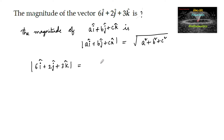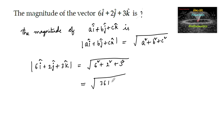Therefore, the magnitude of the vector 6i + 2j + 3k is equal to the root of 6² + 2² + 3², which is equal to 36 + 4 + 9, so the root of 49. The square root of 49 is 7, and since length is positive, we take plus 7. So the magnitude of the vector 6i + 2j + 3k is 7 units.